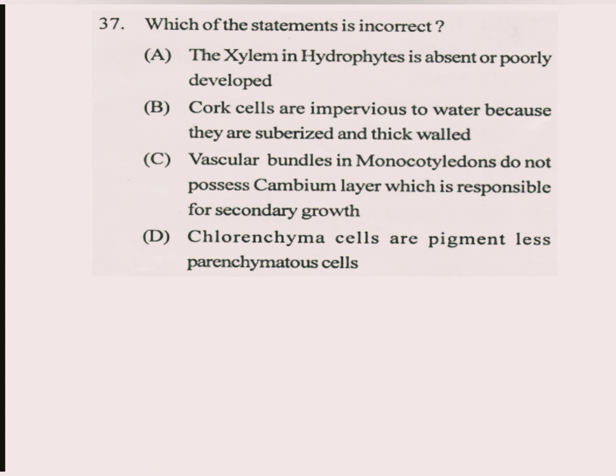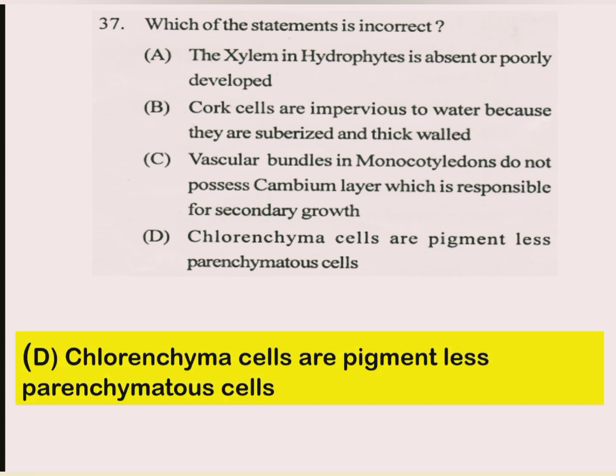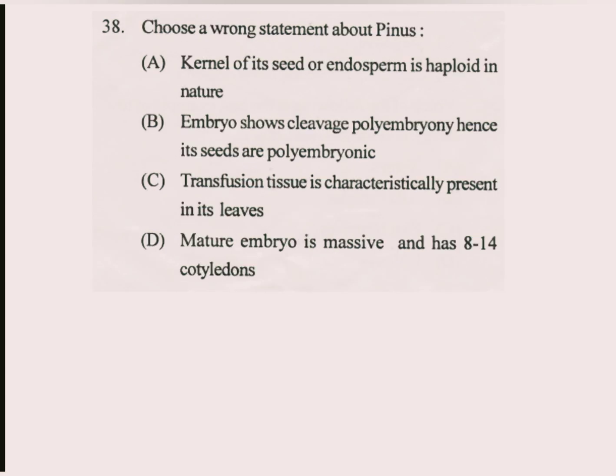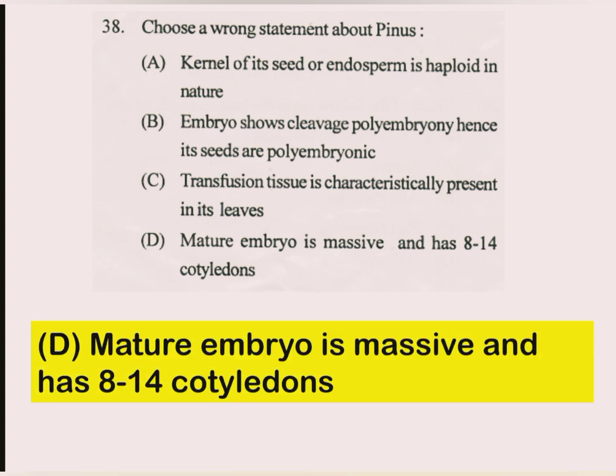Question number 37. Which of the statements is incorrect? The answer is D part: collenchyma cells are pigmentless parenchymatous cells — this is a false and incorrect statement. Question number 38. Choose a wrong statement about Pinus. The answer is D part: mature embryo is massive and has 8 to 14 cotyledons.